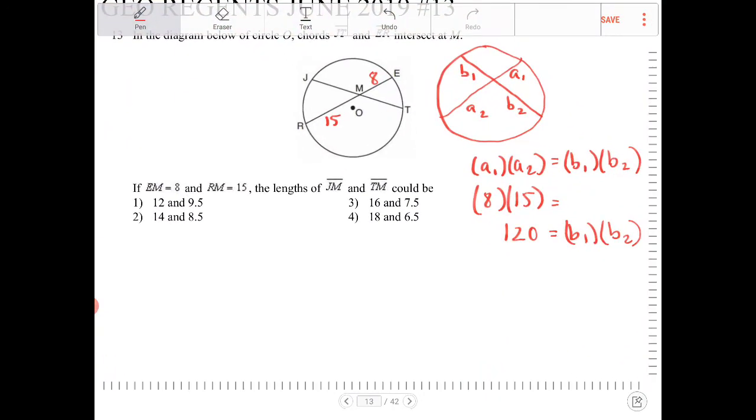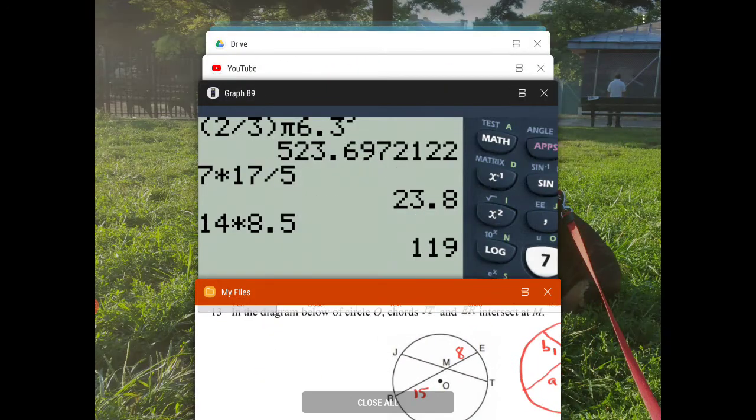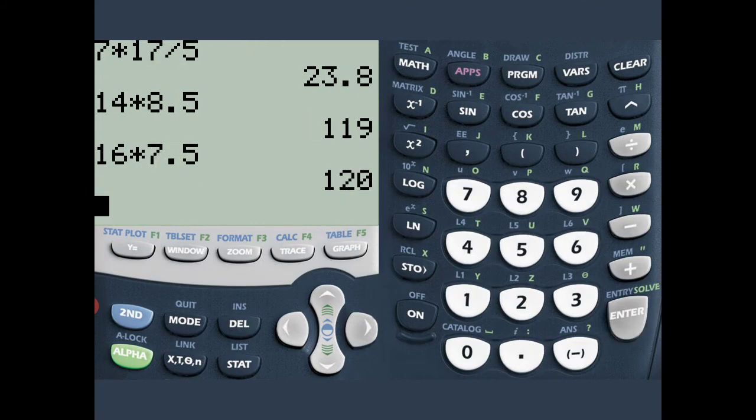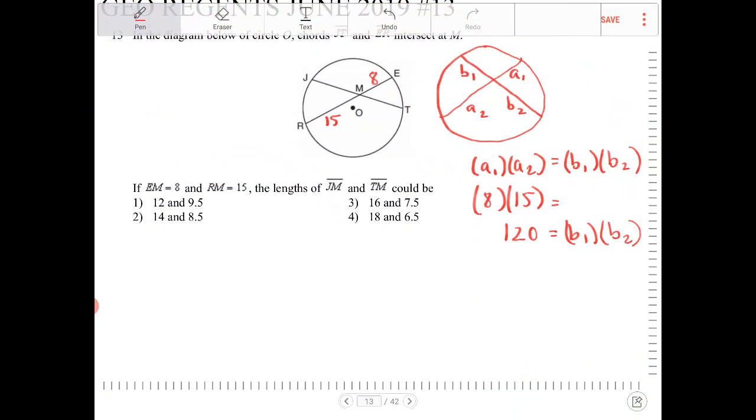And then let's see. 16 times 7.5. I think that might be it now. 16 times 7.5. That's 120. So that would be option 3.